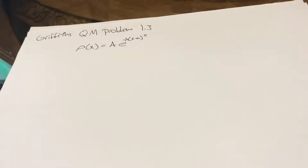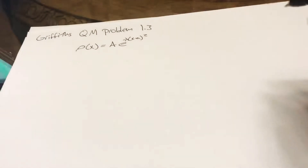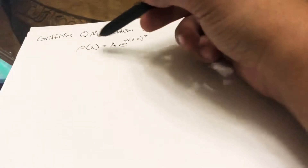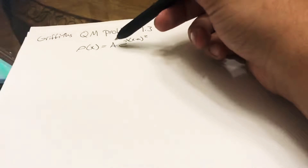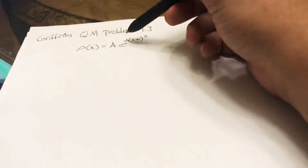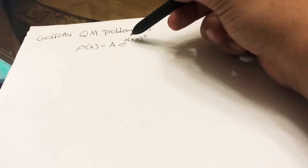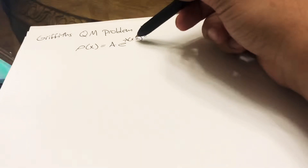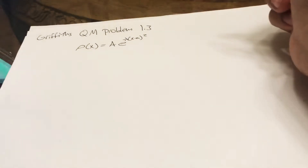We're going to be solving Griffith's quantum mechanics problem 1.3. This problem gives us ρ(x), which is a function of x equal to some constant A times e to the negative λ times (x minus a) squared.